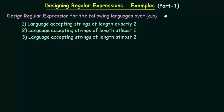In this lecture we will be seeing some examples of designing regular expressions. We have our question given here: design a regular expression for the following languages over {A, B}. Here our sigma or our inputs are A and B. We will be designing three languages: the first accepting strings of length exactly 2, the second accepting strings of length at least 2, and the third accepting strings of length at most 2.